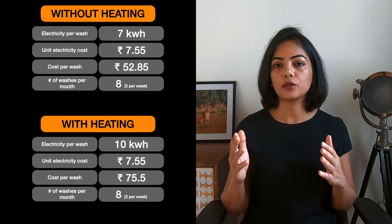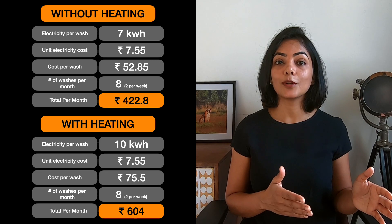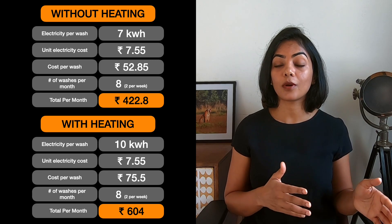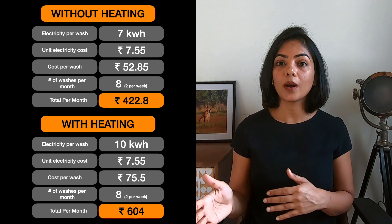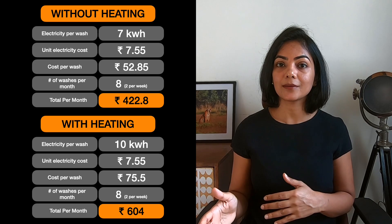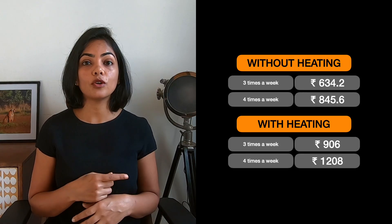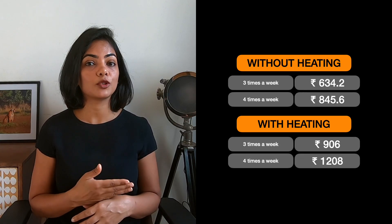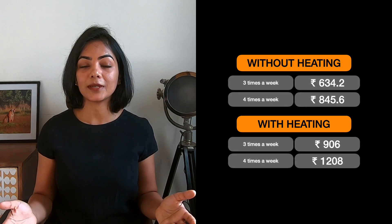So how much is the monthly increase in electricity? If you're running your washer dryer two times a week without heating, the electricity bill will go up by about 425 rupees, and with heating it will go up by about 600 rupees. If you're running it three times a week, four times a week — shown on the screen — how much it's going to go up with or without heating and so on. You get the idea.